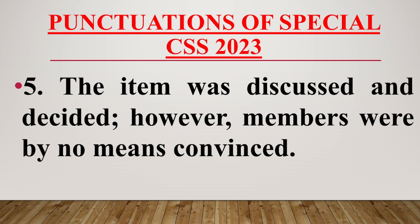Number 5 sentence: The item was discussed and decided — again, a semicolon goes here — however, comma, members were by no means convinced. The rule for semicolons is: if there are two independent clauses that are directly interrelated with each other, then we use a semicolon between them.